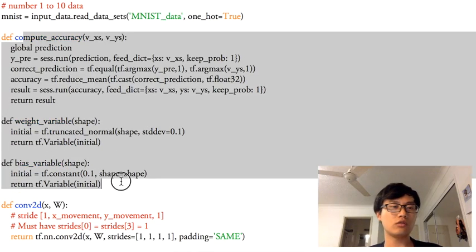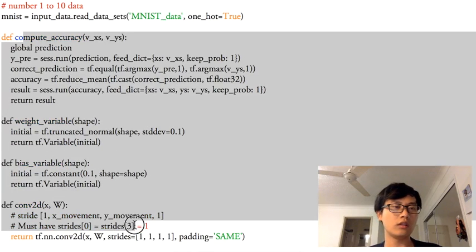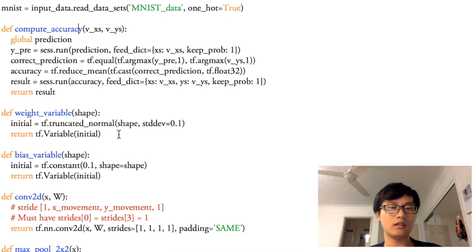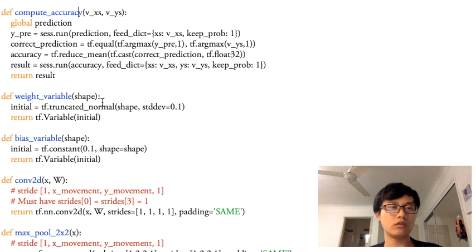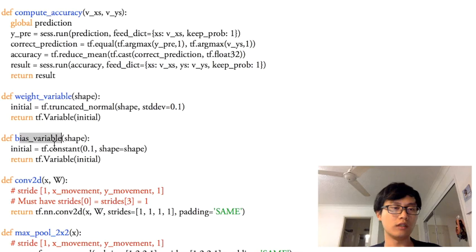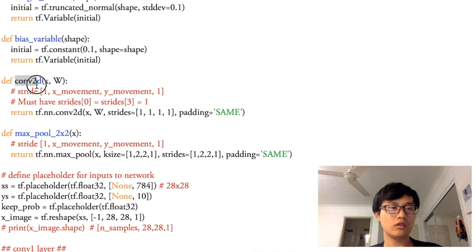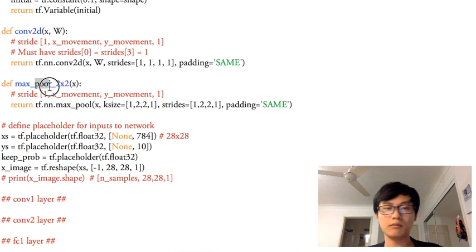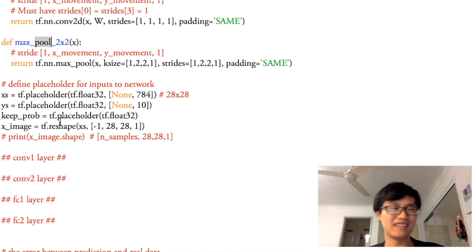These are all the functions we're going to use in this tutorial. We have a function to compute accuracy — that calculates accuracy once we've trained the model — a weights variable to get the weights and bias in our model, a function to create the convolutional layer, and the pooling process. We're going to use max pooling 2×2, which we'll talk about later.